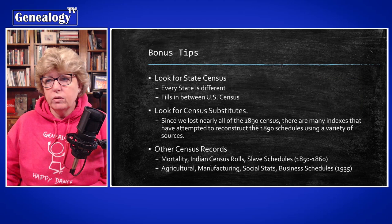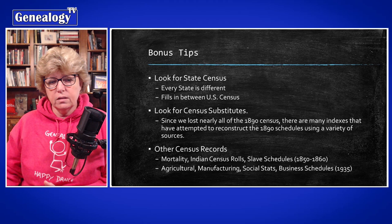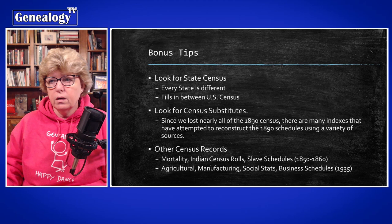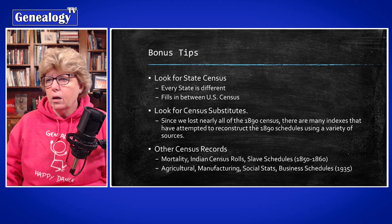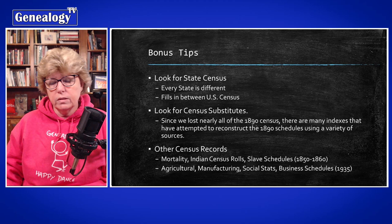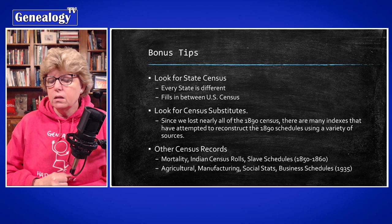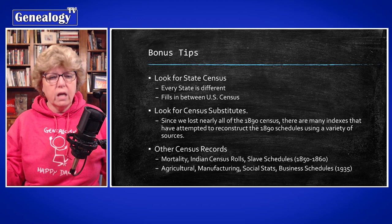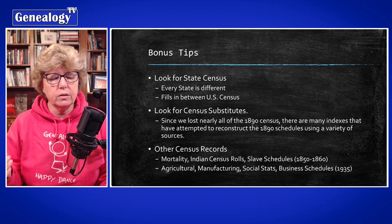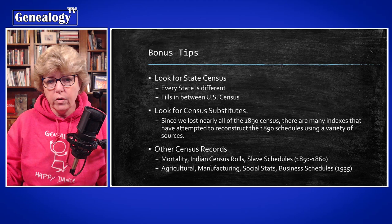Some bonus tips: make sure you're looking at state censuses. Every state had different censuses, and some didn't have them at all, but a lot of times they were taken in between the decades of the federal census. Check your state archives to begin that search. Also look for census substitutes — as you probably know, we lost nearly all of the 1890 census due to water damage from a fire. Many organizations have created indexes to help replace that 1890 data using things like city directories and state censuses.